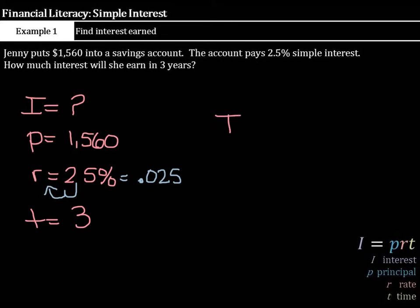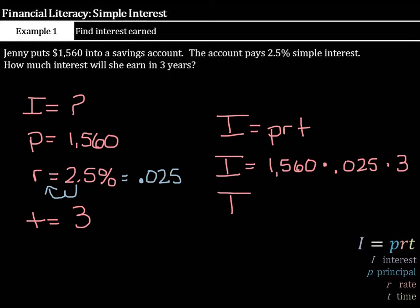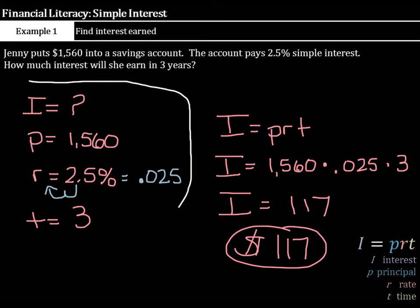Now, start with I equals P times R times T. Interest is what you're solving for. Your principal was $1,560 times .025 times 3. When you multiply these numbers together, I equals $117. So, your answer, $117. One of the keys in solving this type of problem is defining your variables so you know what you're solving for. So, starting with your list of the variables becomes very important so you're able to use the formula correctly.